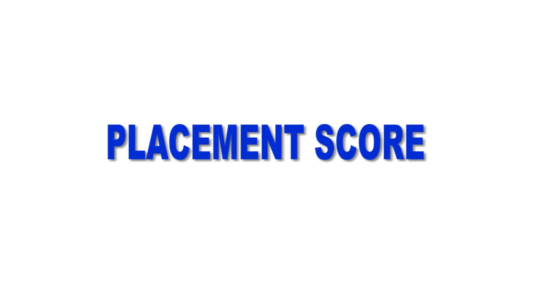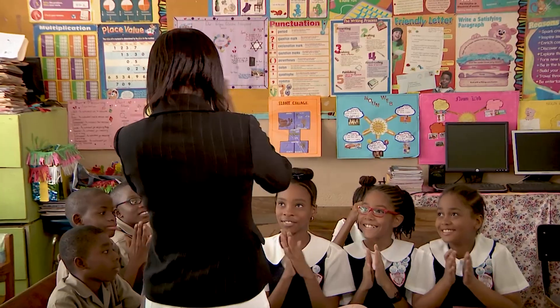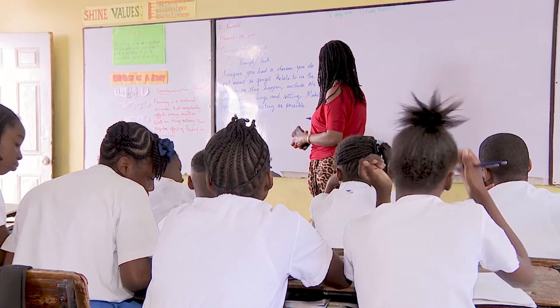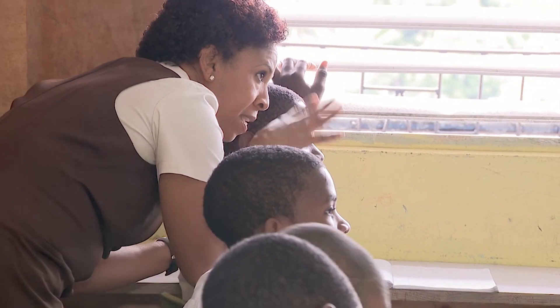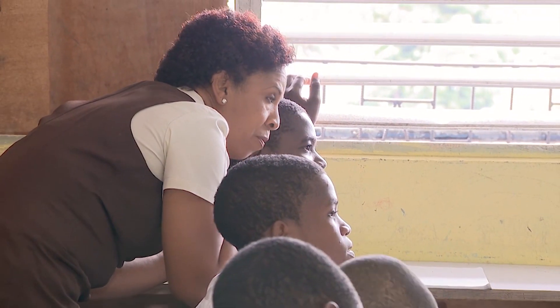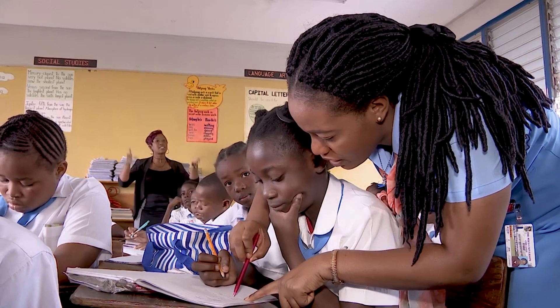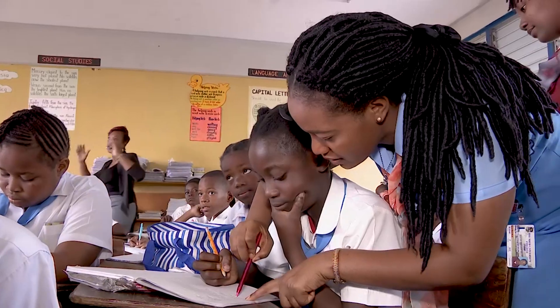Let's look at the placement score. The placement score is the score used to place students in a high school. This score is derived by: one, determining the number of questions a student answered correctly on each test; two, weighting the various components, that is,